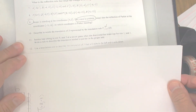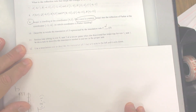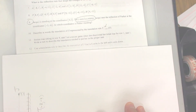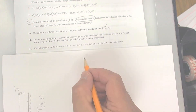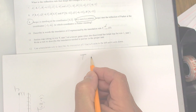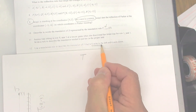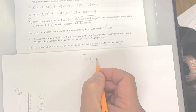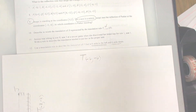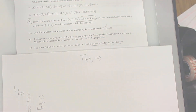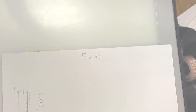Number 12: use a translation rule to describe the translation of P that is 6 units to the left and 6 units down. 6 units to the left is negative 6, and 6 units down is also negative 6. Just write it like that for number 12. It will be multiple choice on your test, so you're going to pick the best answer.